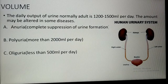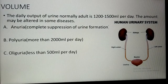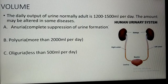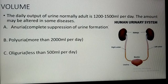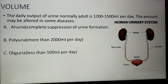The urine volume may be altered in some conditions. Complete suppression of urine formation is called anuria, which is found in acute nephritis, renal stones, blood transfusion, and mercury poisoning. Urine volume more than 2000 ml per day is called polyuria, found in diabetes mellitus, diabetes insipidus, and chronic glomerulonephritis.